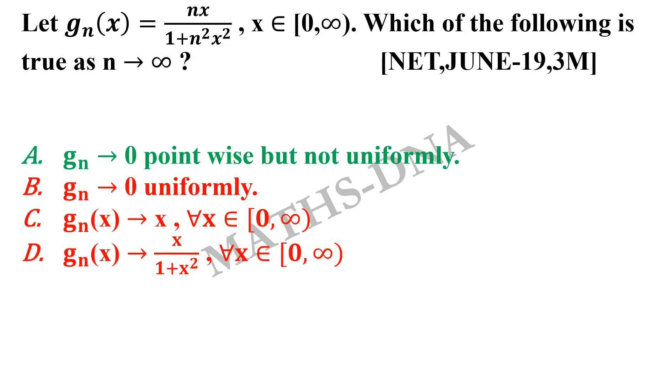So the only correct option is option a: g_n converges to 0 pointwise but not uniformly.